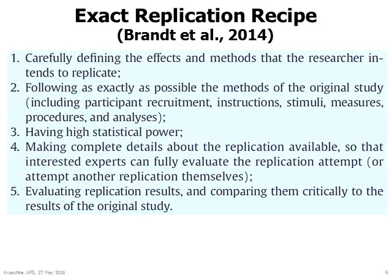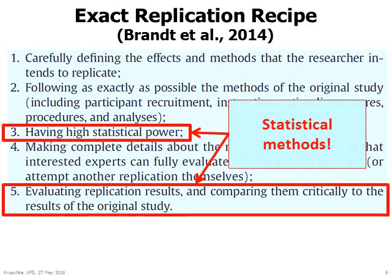A recipe for exact replication was provided by Brandt et al., who specified five ingredients. Three of the five do not involve statistical methods, but two of the five ingredients have statistical methods at their core. Ingredient three says the replication should have high statistical power, and ingredient five involves evaluating the results. Let's consider the last of these — how to evaluate results.